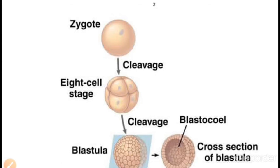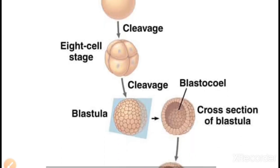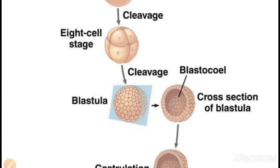As cleavage continues, the cells will form a solid ball of cells that is called morula. Between the cleavage stage and before blastula, we have this stage called morula, which is basically a solid ball or cluster of cells formed by the mitotic division of cells.